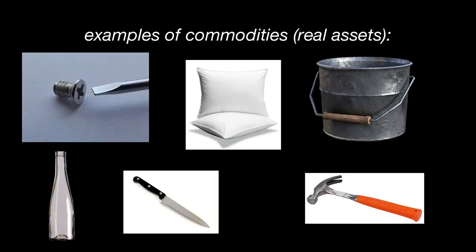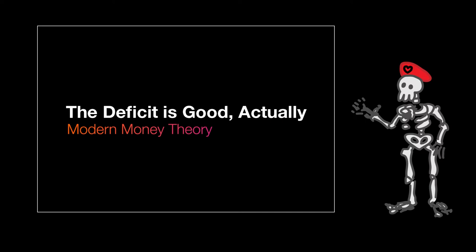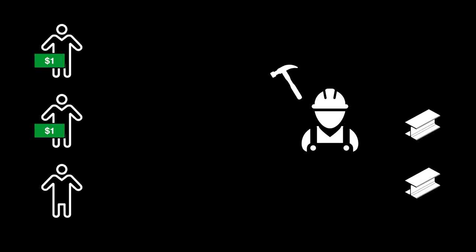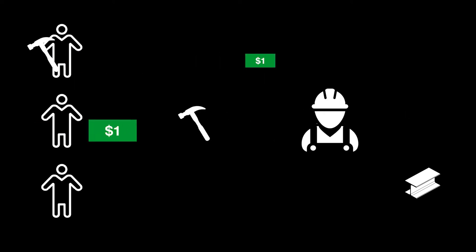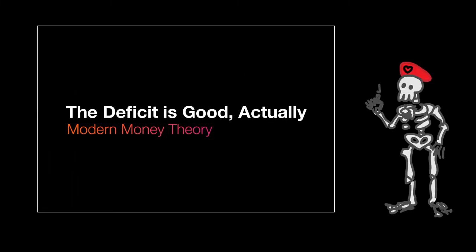Commodities, or real assets, are things which, through their physical properties, have a use for humans. In our society, commodities are created to be sold — they're sold for money. Just like the amount of steel limits the amount of hammers that can be made, the amount of money can limit the amount of hammers that are made. It takes other people having money to sell them a hammer, and it takes money to buy the labor time and steel to make the hammer in the first place. Money is a resource, like any other.